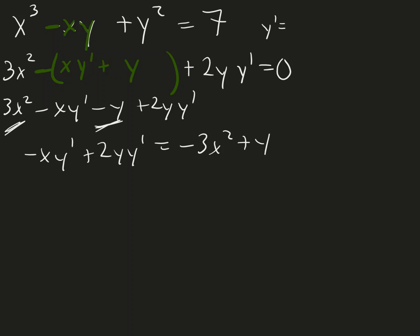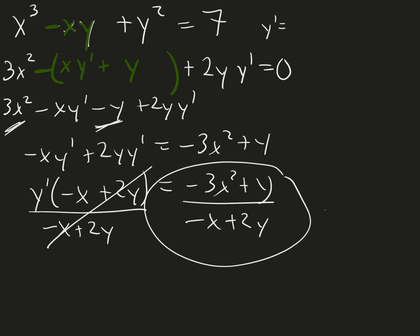And, finally, one more little algebra trick here. If this has a y prime, and this has a y prime, we can factor it out as a GCF. And, you might not see why I would want to do that at first, but you should here in just a second. Because, now I've got this times this. So, if I want to undo timesing by negative x plus y, just divide both sides by negative x plus 2y. And, so, then there we go. y prime equals all of this stuff. That would be our derivative of y.